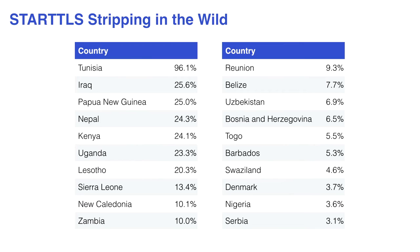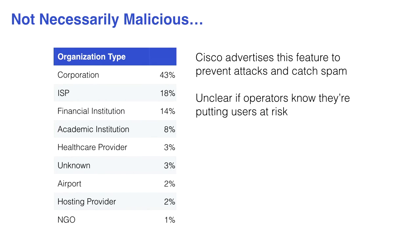Man fragt sich, warum passiert das – ist das bösartig? Sind das Länder, die E-Mails entschlüsseln wollen? Das ist nicht einfach klar. Wenn man Firmen anschaut, sieht man, dass Cisco das tatsächlich als Feature verkauft. Cisco hat diese ASA-Geräte und Cisco-Firewalls, die wollen, dass man E-Mails anschauen kann, die über dieses Gerät gehen, um nach Malware oder Spam zu suchen. Das können die nur machen, wenn sie auf den Plaintext der E-Mail zugreifen können – deshalb korrumpieren die STARTTLS-Befehle und dann wird die E-Mail im Klartext geschickt.